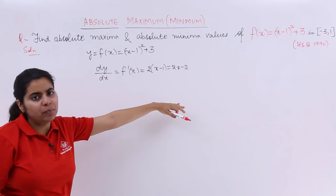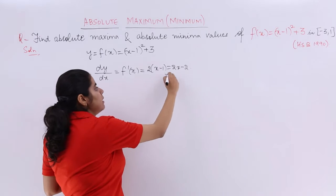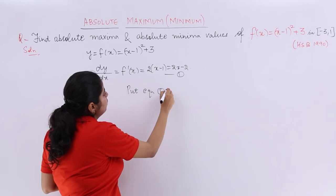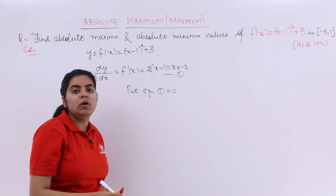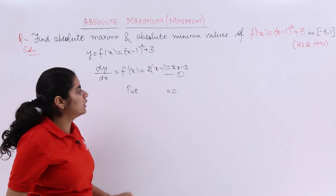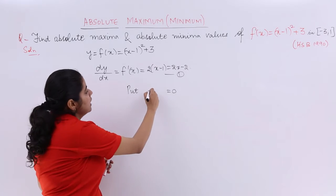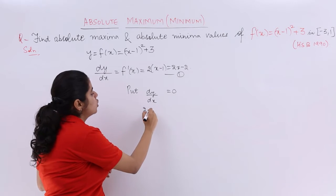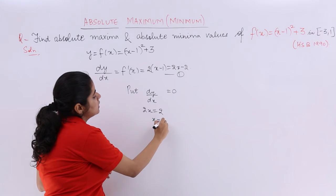Now, can we get a stationary point from this? Yes, definitely. If I name this as equation number 1 and I write put equation number 1 equal to 0, or if you are not comfortable with it, you can write again as in the previous questions we have written, put dy/dx equal to 0. You get a stationary point, so it is nothing but 2x = 2 or x = 1.